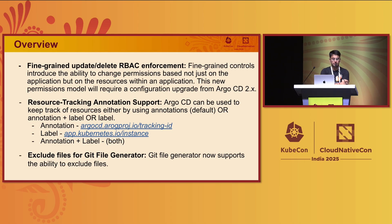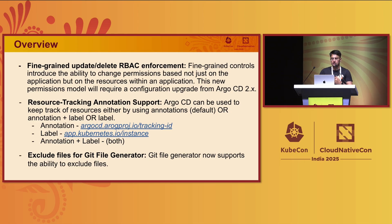Another feature introduced was resource tracking annotation, done by Michael Crenshaw from Intuit — shout out to him as well regarding the hydrator manifest pattern too. Now Argo CD can keep track of the resources it's managing by using annotations, labels, or annotation plus labels. It has an annotation called tracking ID and a label called instance — like argocd.argoproj.io/instance. If Argo CD wants to track a specific resource, it can add both the annotation and the label so it knows which resources it needs to manage for an application in order to deploy it to the cluster.